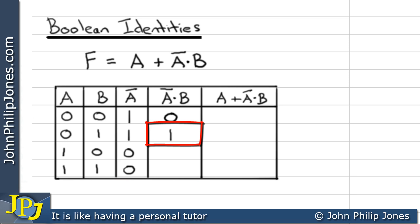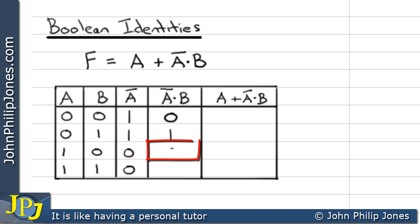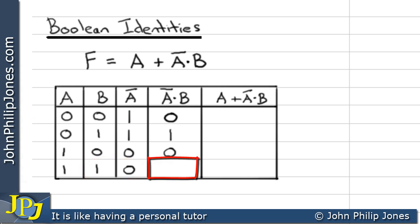This entry shows when B is 0 and NOT A is 0, which gives 0. And when B is 1 and NOT A is 0, that also gives 0.